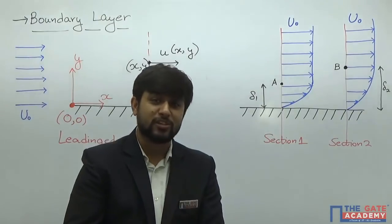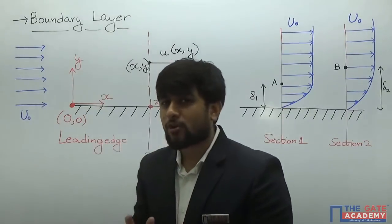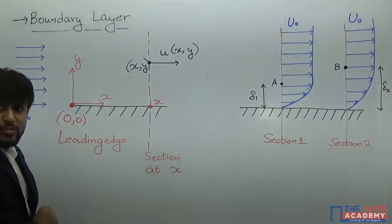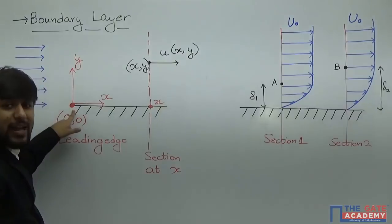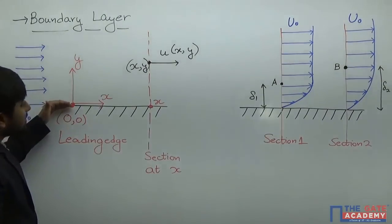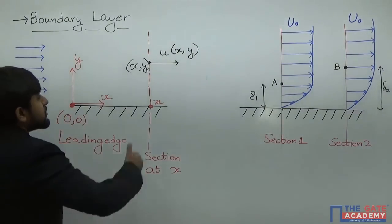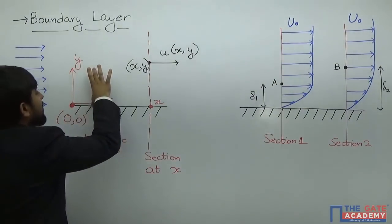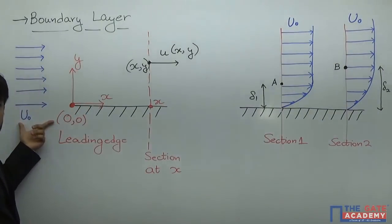In order to understand what boundary layer is, I have drawn two figures — one on the left and the other on the right. The figure on the left shows a stationary plate, and the leading edge of the stationary plate has been marked as the origin. The x-axis of the coordinate system is along the stationary plate while the y-axis is perpendicular to the plate. So x signifies the distance of a flow section from the leading edge of the plate, while y signifies the distance from the plate in the direction perpendicular to it. A fluid stream is shown in blue.